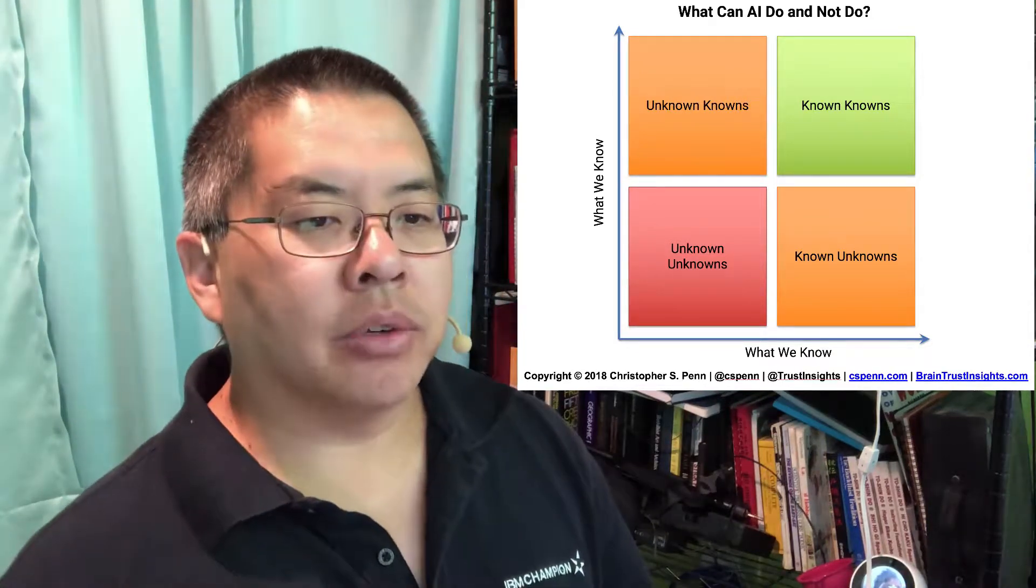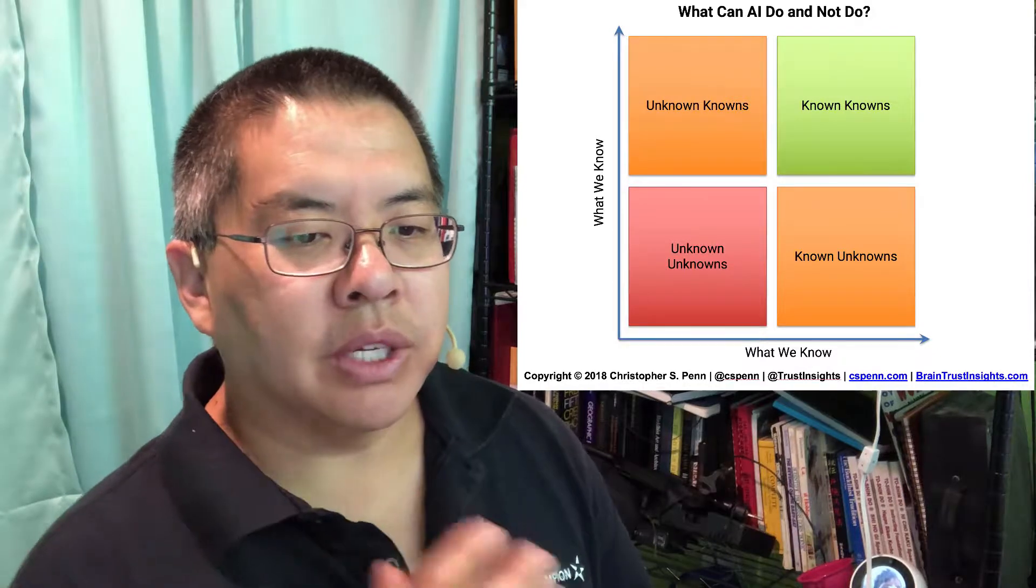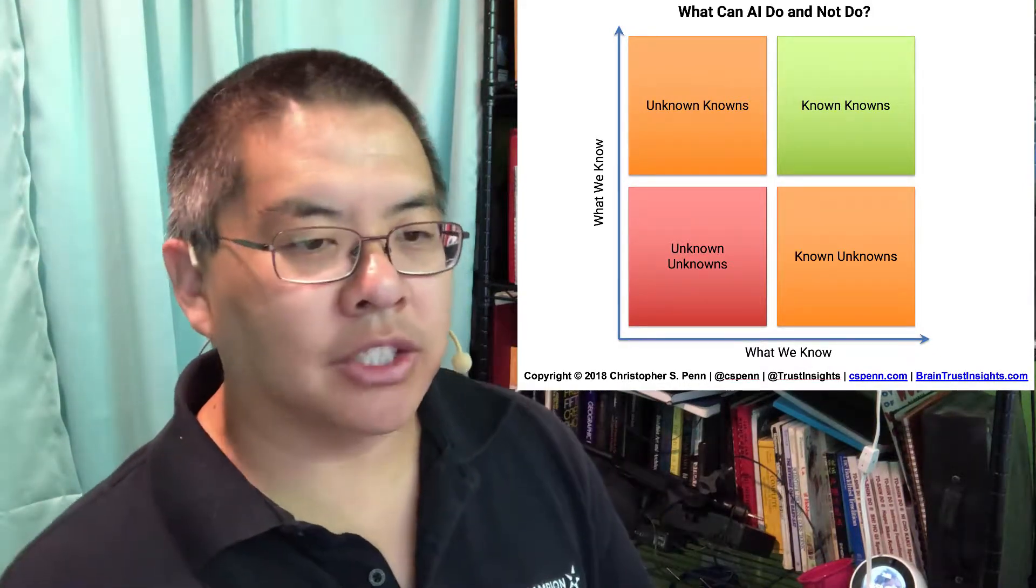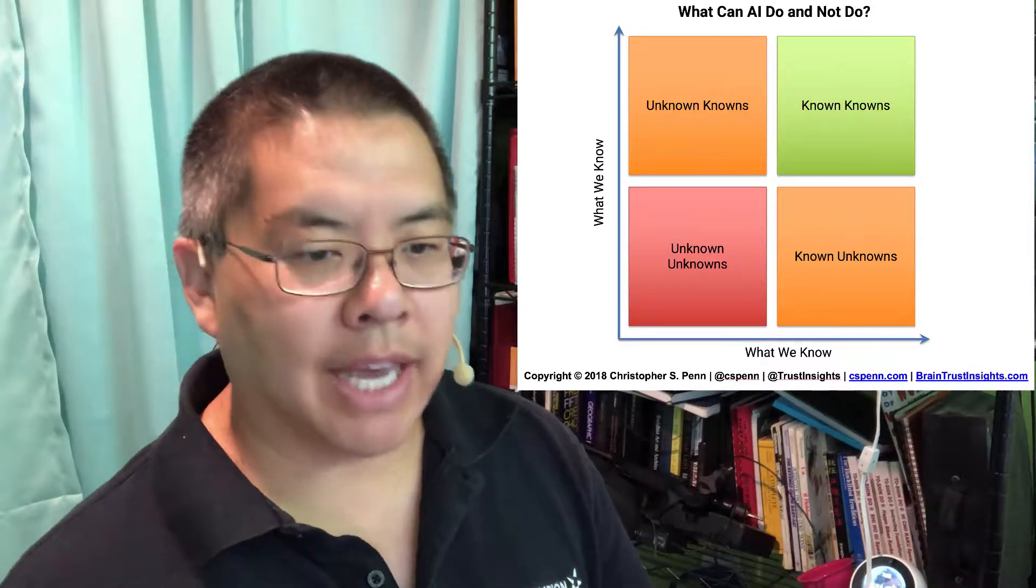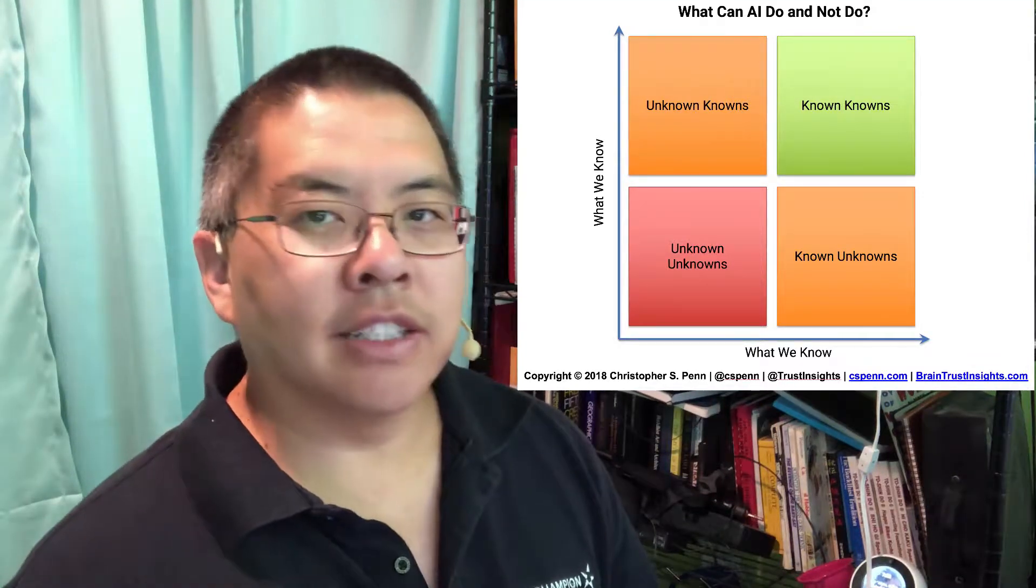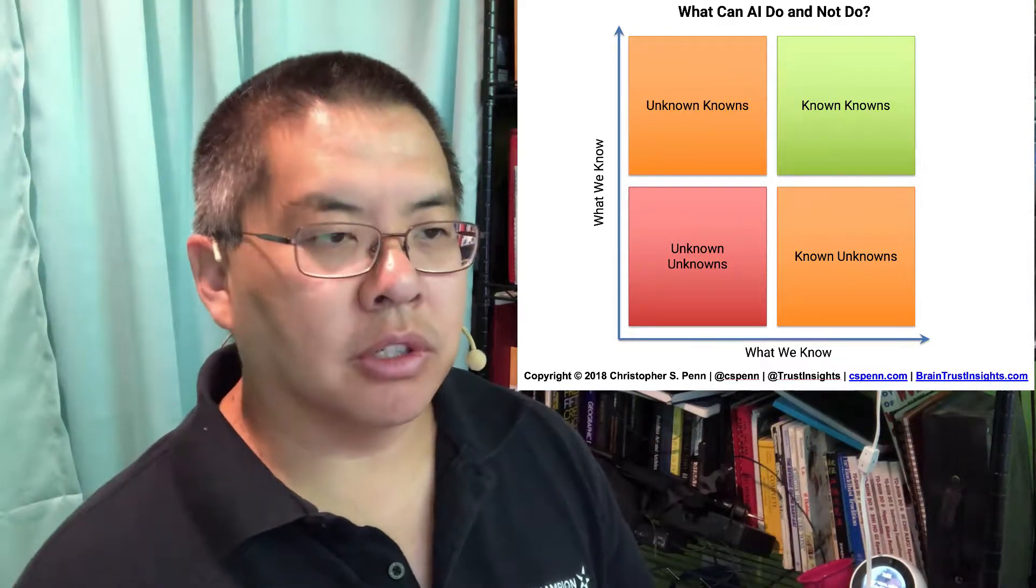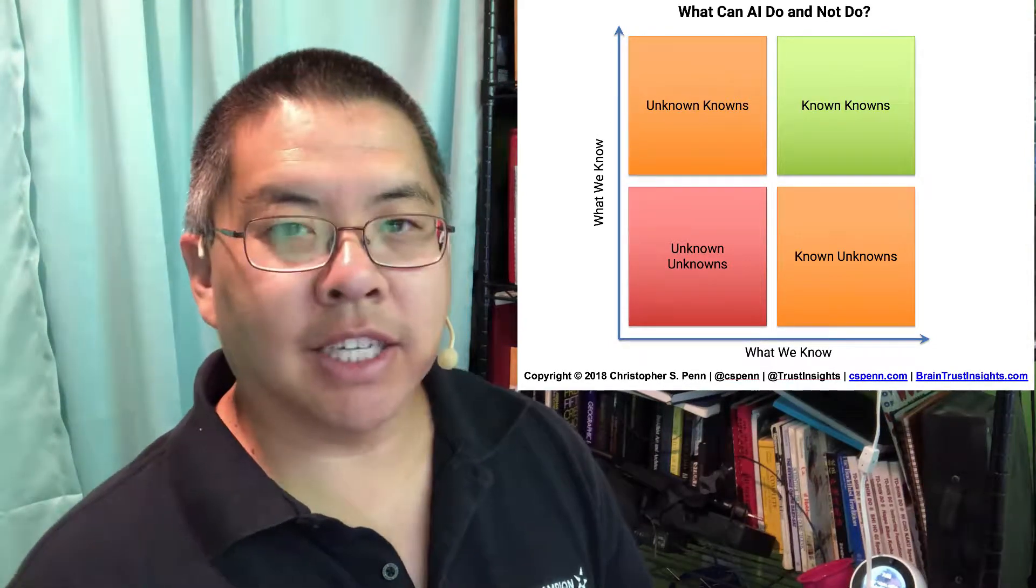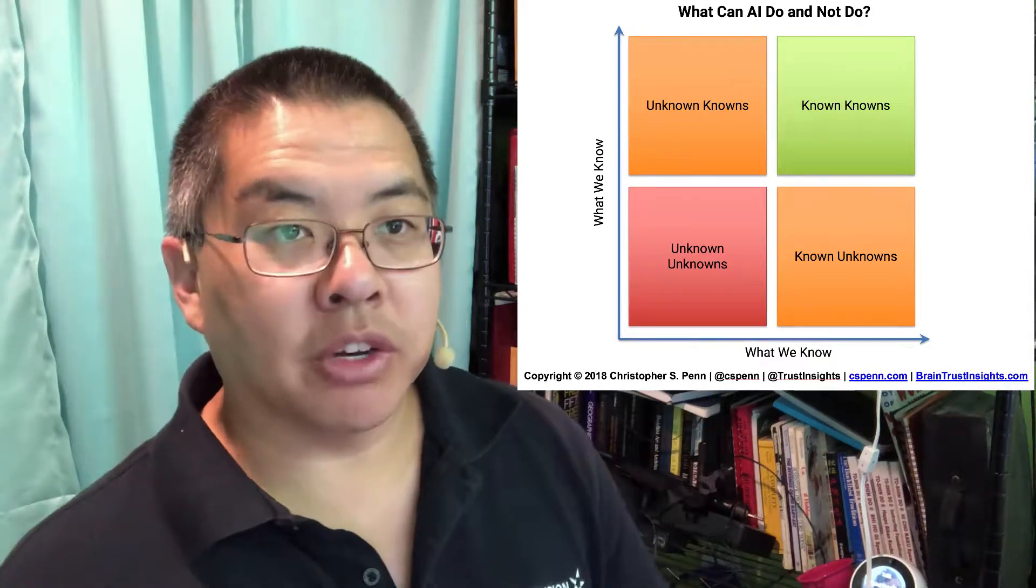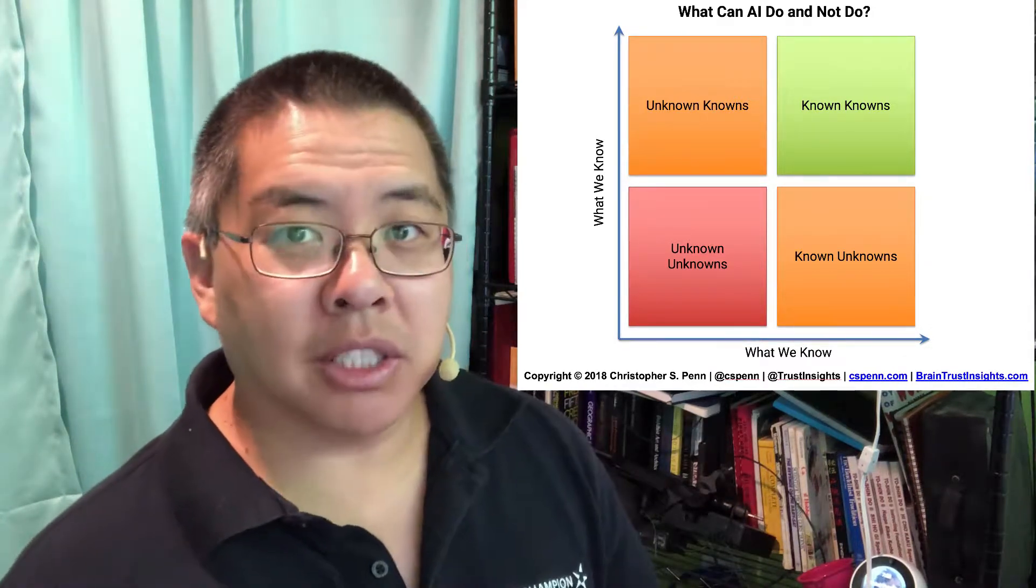The second category is known unknowns. We know the answer, we don't necessarily know how to get it. This is analogous to if you have a GPS or a maps app - you have a destination, you have a route to get there. If you know where you're going but you're not sure how to get there, GPS is a helpful thing.